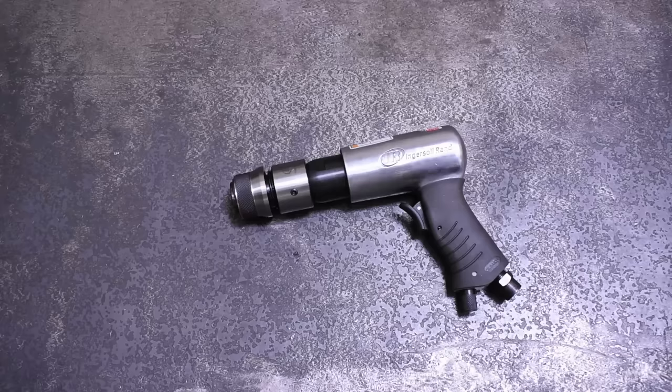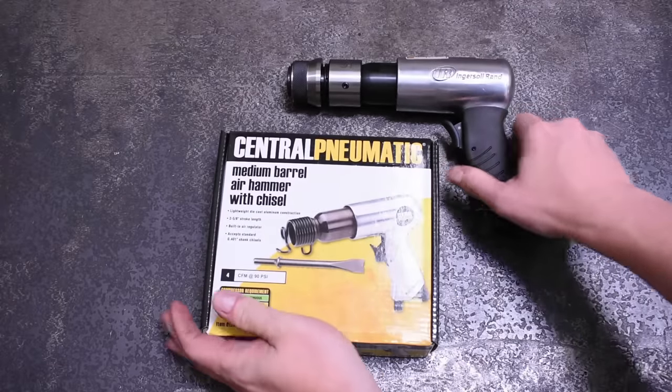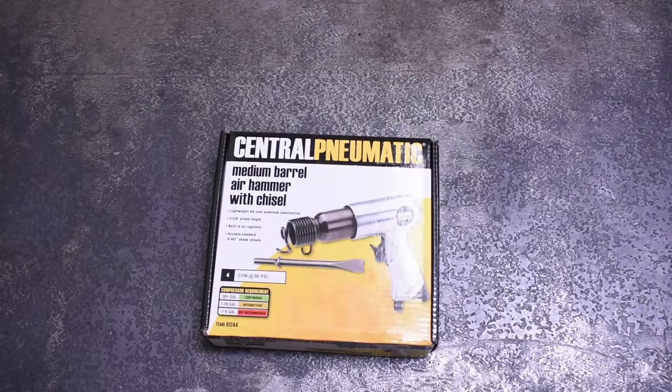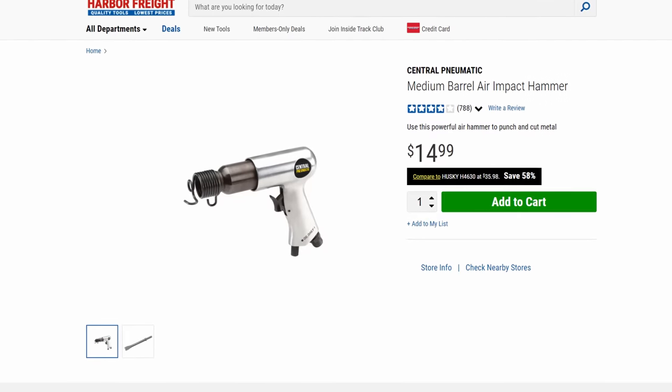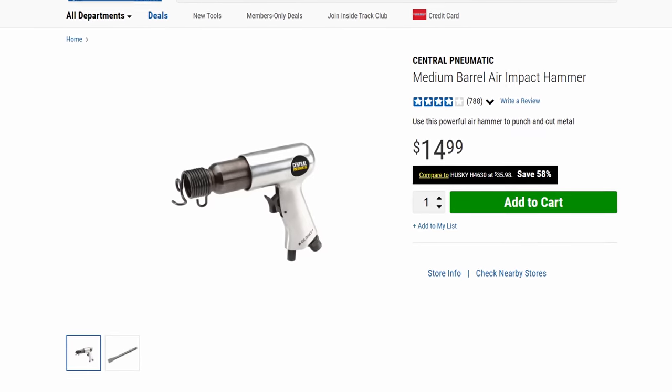Welcome back to the Torque Test Channel. This is episode two of our new air hammer test series. Today we have the medium barrel air hammer from Harbor Freight that comes in at $14.99, and if you were lucky enough to get a coupon when those existed or have the Inside Track Club, you can even sometimes save a few bucks on that price.